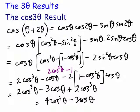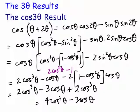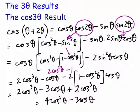Let's go on to the cosine now. Here we have the cos(3θ) results. Again, we need the 2-theta results here and again here. Doing the expansions, you can see sin² = (1 − cos²).